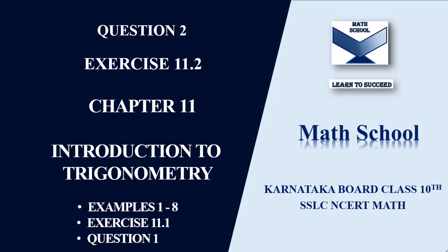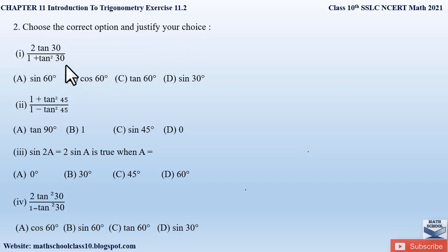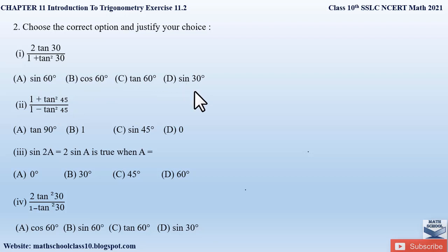Also click the 'i' button above and do watch the whole video till the end. Try to practice the problems which I am solving here. Question number 2 from Exercise 11.2, Chapter 11, Introduction to Trigonometry says: choose the correct option and justify your answer. There are four parts of the question, each with four options. We have to solve each part and find the correct option.